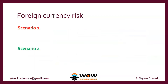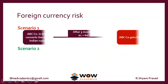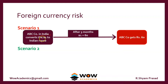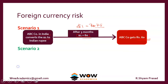There are two scenarios. In scenario one, when the Indian company takes the one dollar to the bank, the rate is now 60 rupees per dollar. The rate was fixed at 75 rupees at the time of the trade, but now they only get 60 rupees. So the company has effectively incurred a loss of 15 rupees.